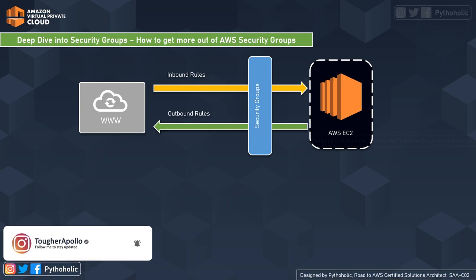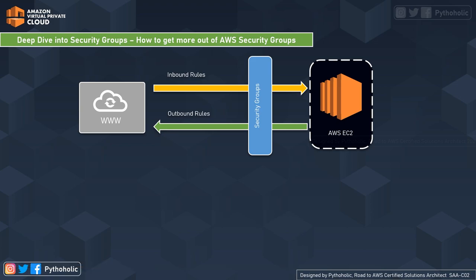What does inbound and outbound mean? Inbound refers to the incoming traffic or the requests that come into the host, and outbound refers to the outgoing traffic — basically the requests going from the host machine to the outside world.